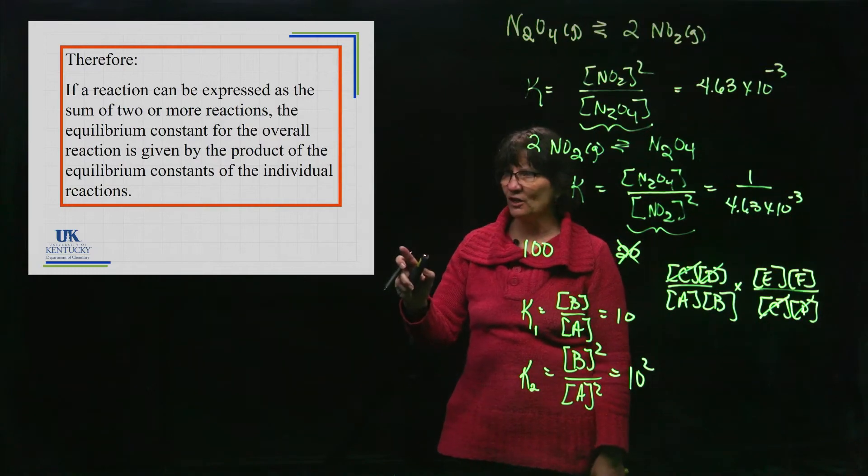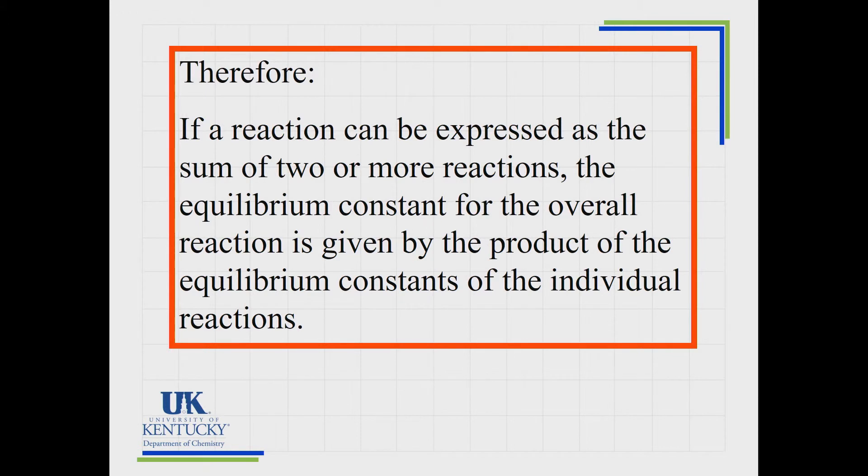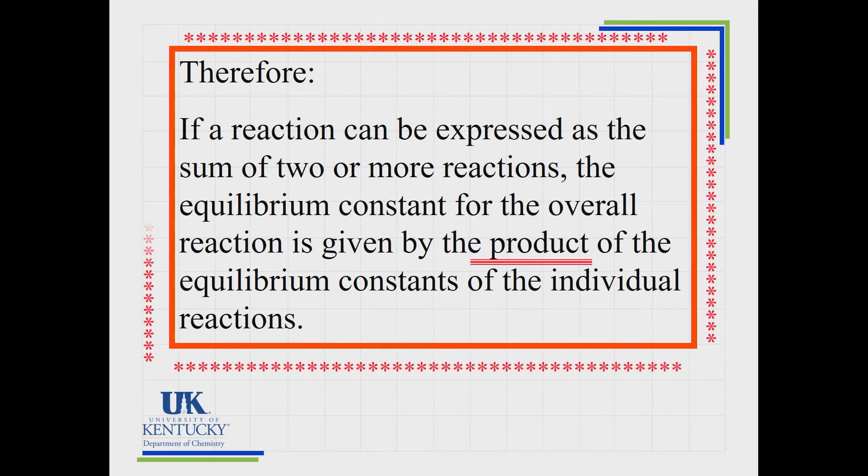I've got a screen that's going to reemphasize. If a reaction can be expressed as the sum of two or more equations, the equilibrium constant for the overall reaction, that summation of those two, was given by the product. It is a product of the equilibrium constants of the individual reactions. It is not a sum. It is a product.